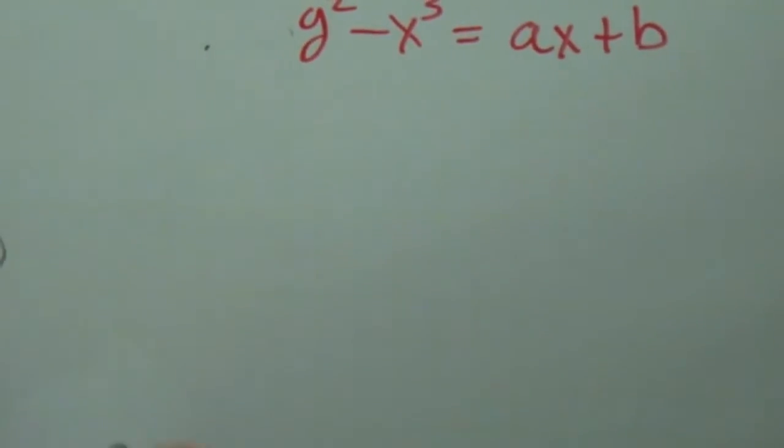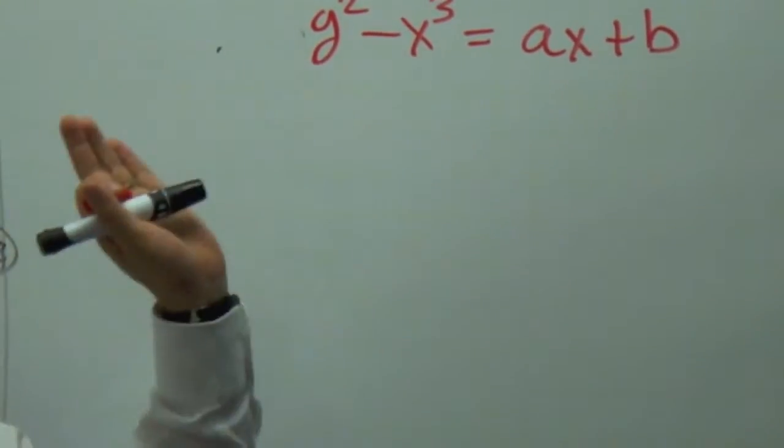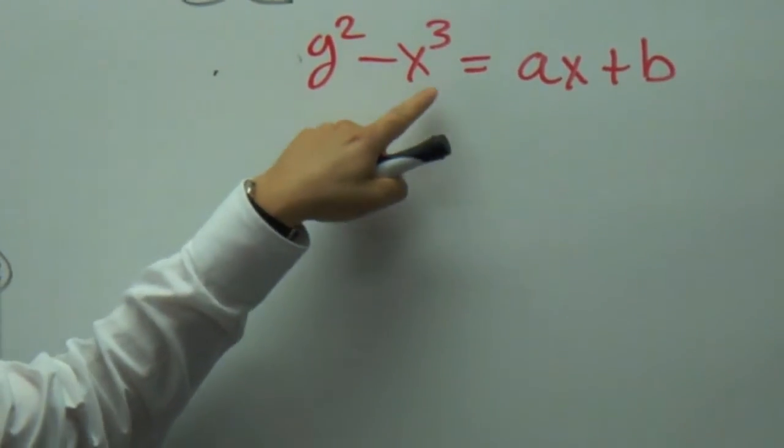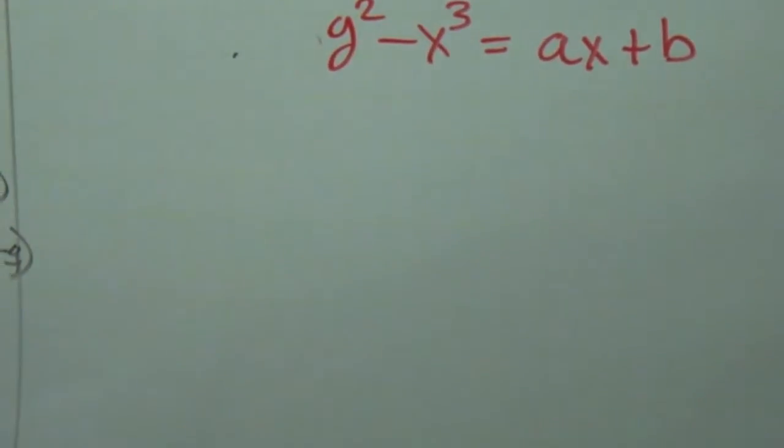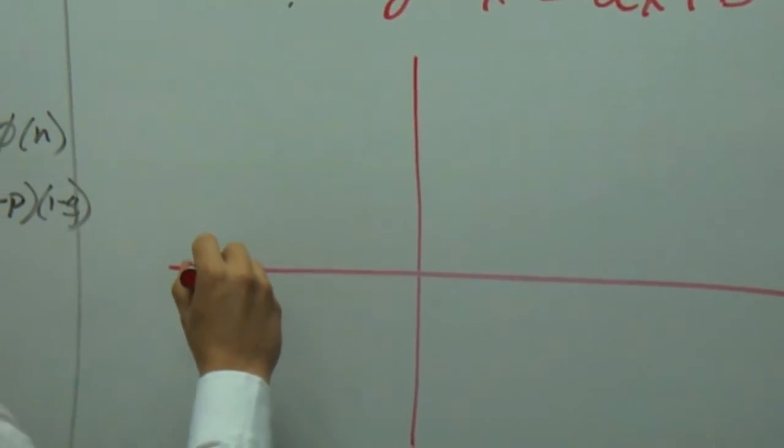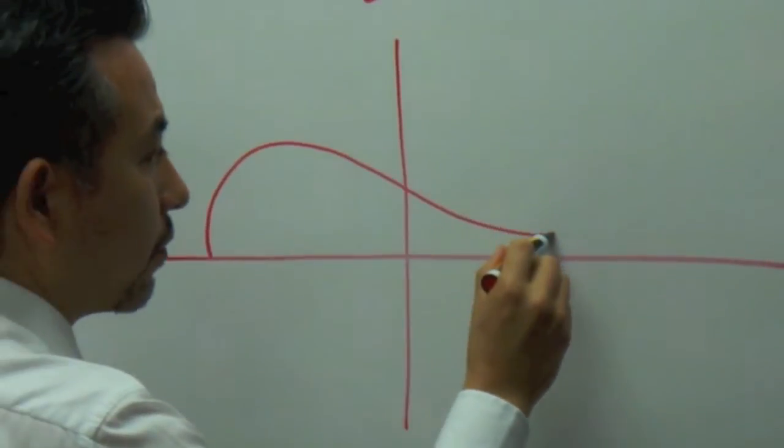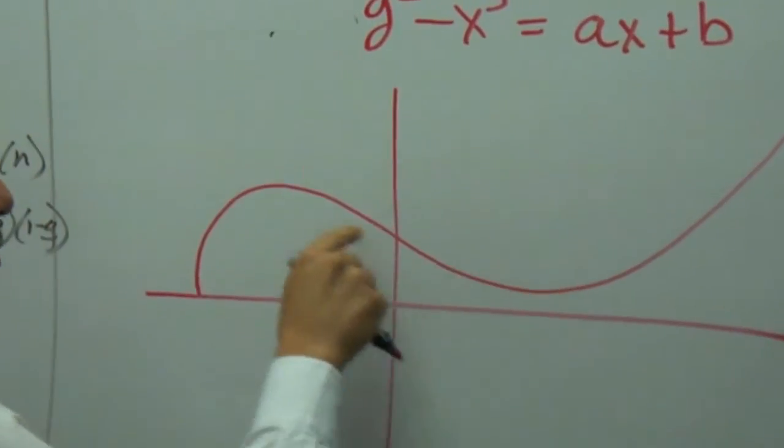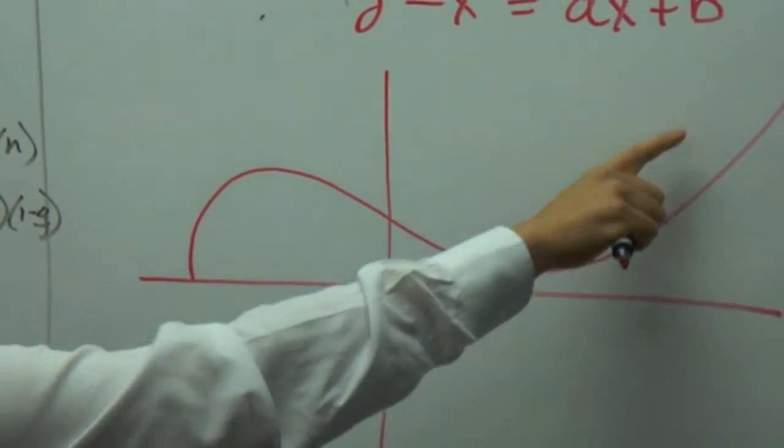From linear algebra, from high school, this is a line, this is a cubic function. And, this is the secret. If we understand this, we understand cryptography. This is the difference between a square and a cubic function.